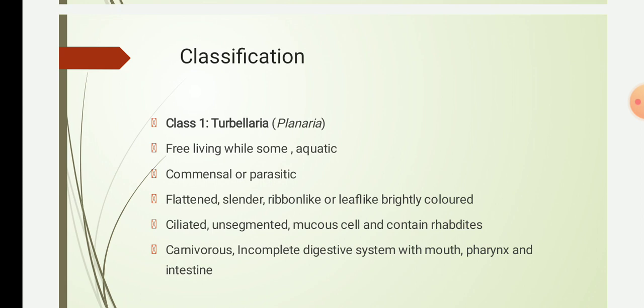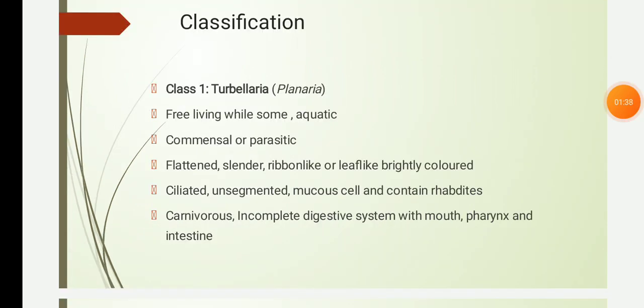We begin with Class 1 Turbellaria. An example is Planaria, also called planarians. The word 'turbella' comes from Latin meaning 'little stirring,' which is why it is called turbella. They are basically free-living, mostly bottom-dwelling aquatic forms found mainly in fresh water, though some are also marine and a few are even terrestrial.